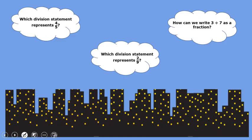So let's check these out. Which division statement represents four fifths? That would be four divided by five. Which division statement represents two ninths? That would be two divided by nine. And how could we write three divided by seven as a fraction? That would be three sevenths.